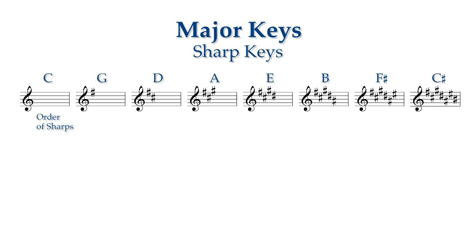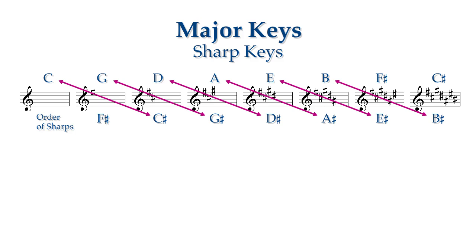Also notice which sharp gets added starting with F sharp, then C sharp, then G sharp, D sharp, A sharp, E sharp, and finally B sharp. Do you notice the similarity between the order of the keys and the order of the sharps that you add? They are shifted two places from each other. The next note in order is always five notes higher if you count the first note as one.